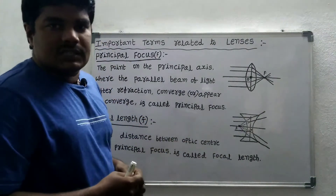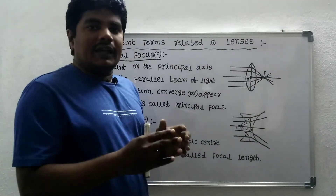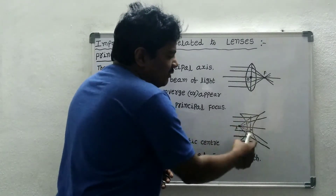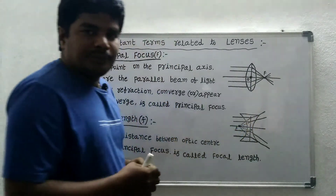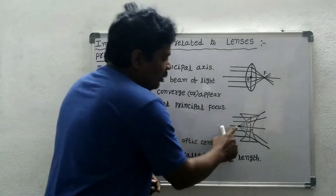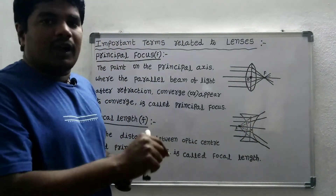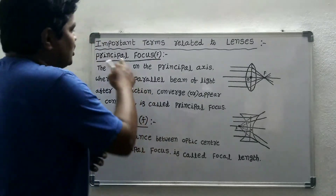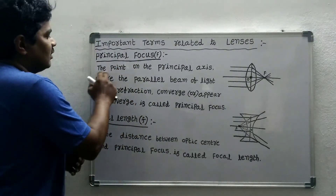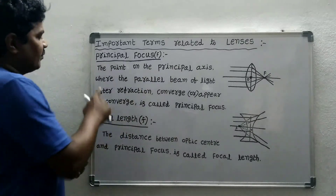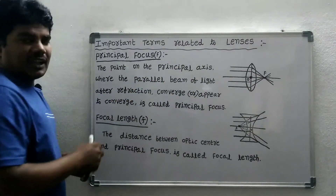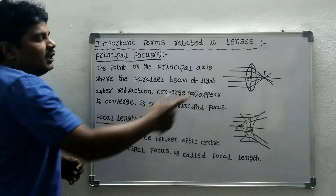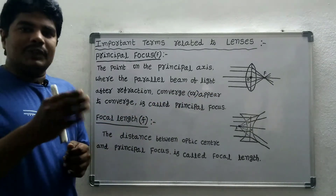For a concave lens, the light diverges after refraction. When we extend the diverging rays in the backward direction, they appear to converge at a point on the principal axis. That point is also called the principal focus. So the principal focus is the point on the principal axis where a parallel beam of light, after refraction, converges or appears to converge. It is represented by capital F.